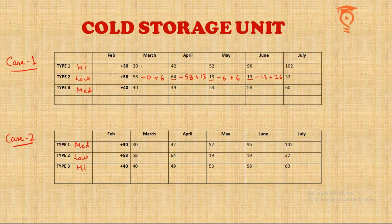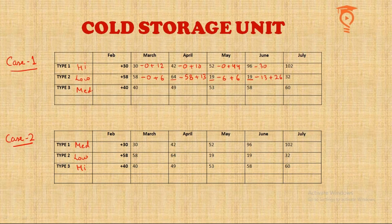In Case 1, if Type 1 is high quality, what was added at end of February will only be disposed of at end of June. From 30 to 42, that means 12 added; 42 to 52 means 10 added; 52 to 96 means 44 added. In June, those 30 are subtracted — four months are over — leaving 66. Then 36 are added to reach 100 (approx.).